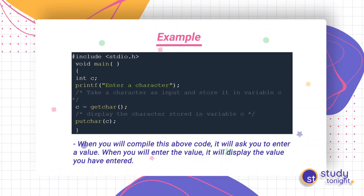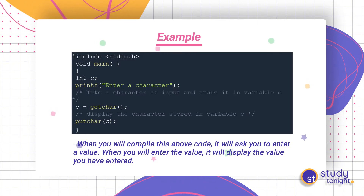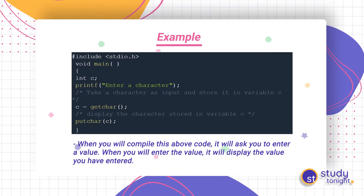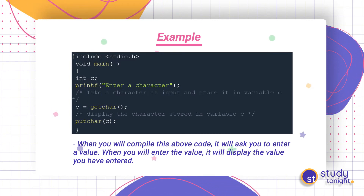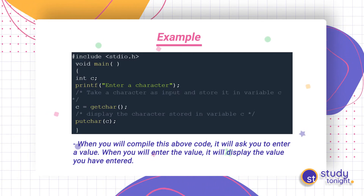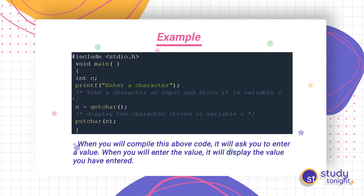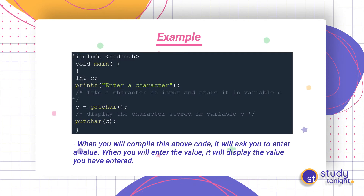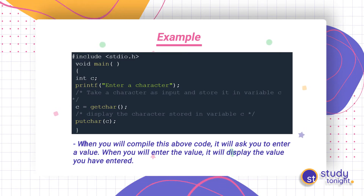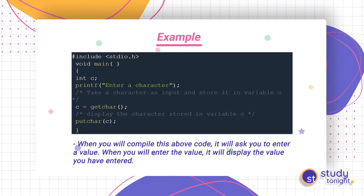Here is an example for getchar and putchar. We have a variable c, and a printf statement displays 'enter a character' on the output screen. When the user enters a character, getchar takes that one character and saves it in c. Then putchar(c) displays that value on screen. Note that we are displaying values using putchar, not only printf. When you compile this code it will ask you to enter a value, and then it will display the value you entered.